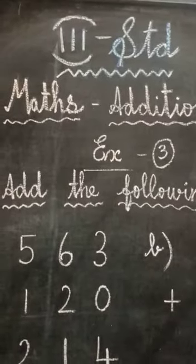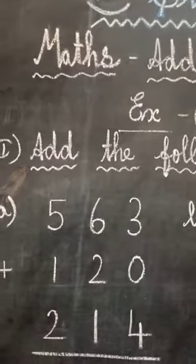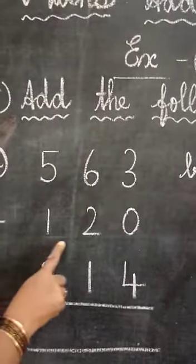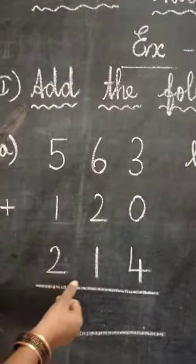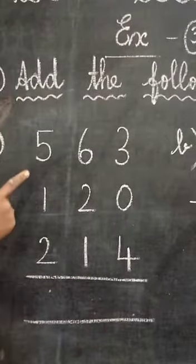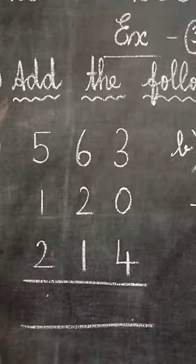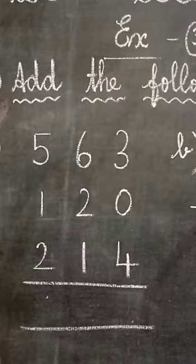Hi putties, today in addition we are going to add 3 rows: 563 plus 120 plus 240. See there are 3 rows, 1st row, 2nd row, 3rd row. Yes, I have already told you you should start addition from 1's place.